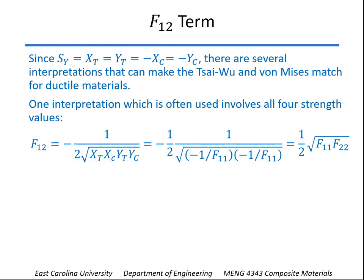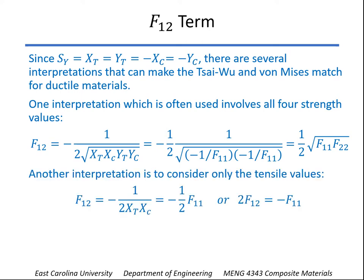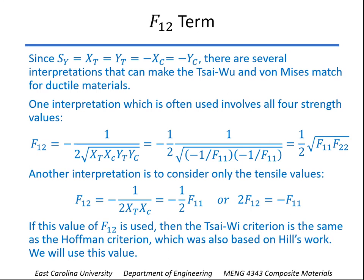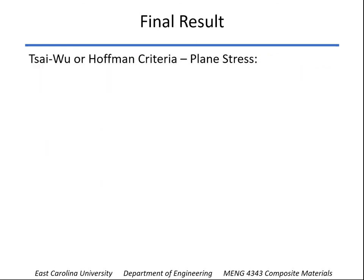One of them, you can use all four of the strengths as shown here. What the Hoffman criterion does is to use only the tensile values. So in that case, F1-2 is as shown here, and so 2F1-2, which goes into the equation, would be minus F1-1. And again, if we use that, not only does the Tsai-Wu criterion give you the same as the Hoffman criterion, but also gives you the same as the von Mises. So we're going to use that value.